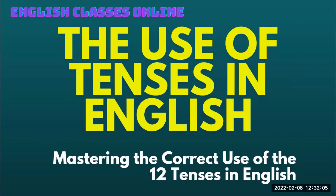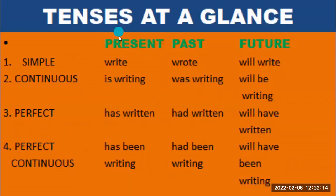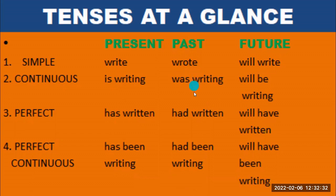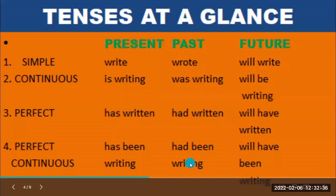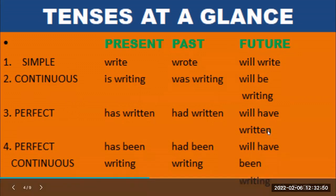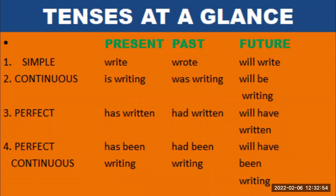We have been able to discuss the four present tenses: the simple present, the present continuous, the present perfect, and the present perfect continuous. Of course, we will find time to talk about the past tenses — the simple past, the past continuous, the past perfect, and the past perfect continuous — and also the future tenses: the simple future, the future continuous, the future perfect, and the future perfect continuous. These are the 12 tenses of the verb. We have discussed four of them in this particular video, with detailed explanations and specific examples.